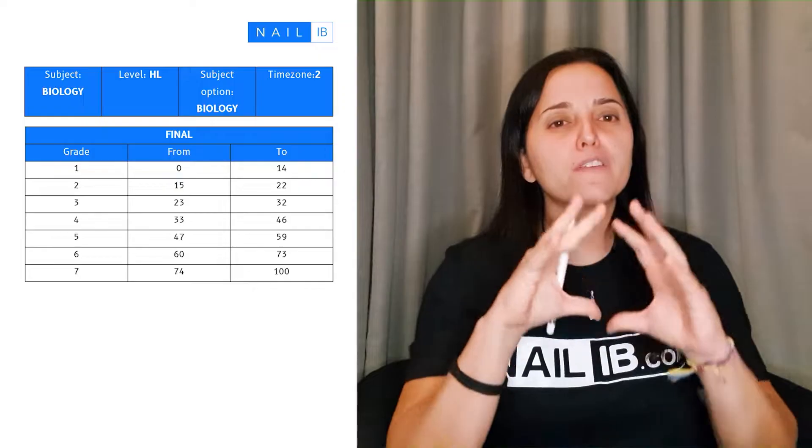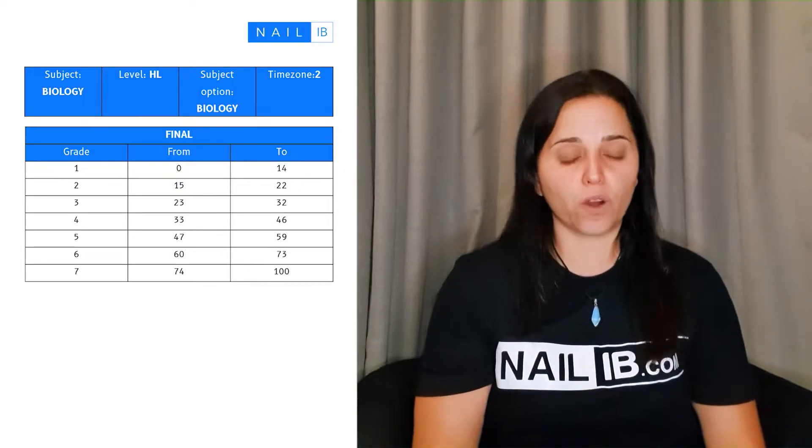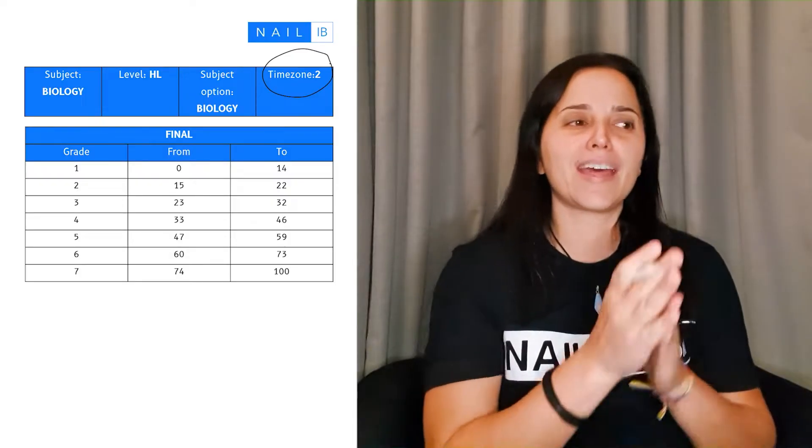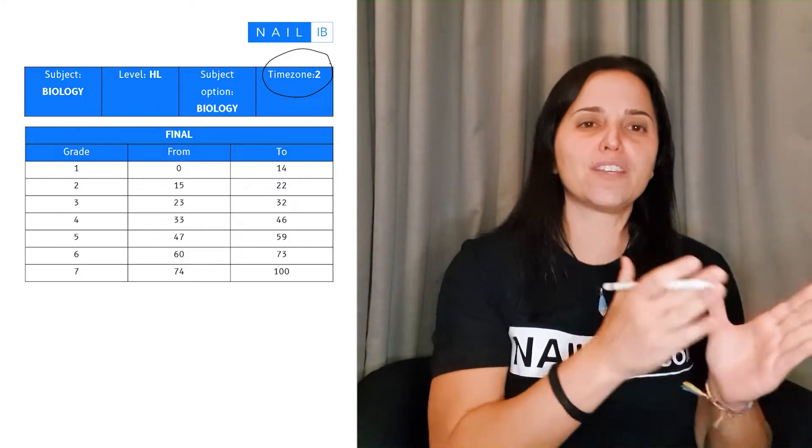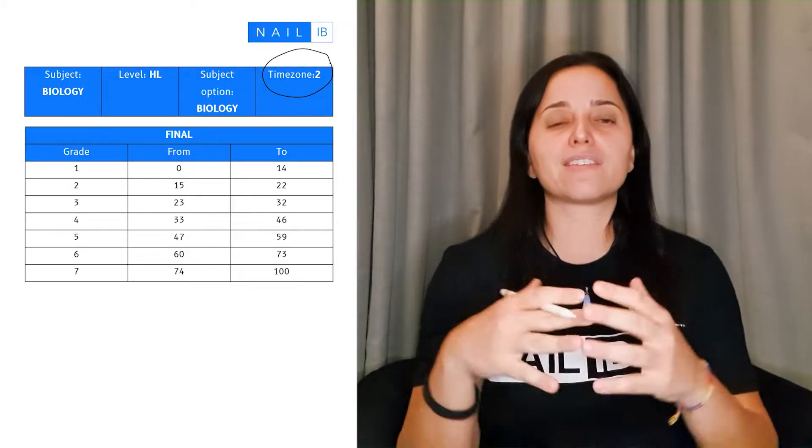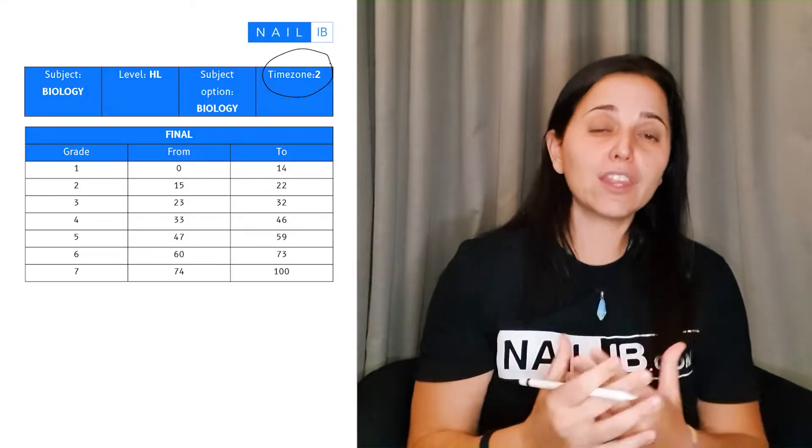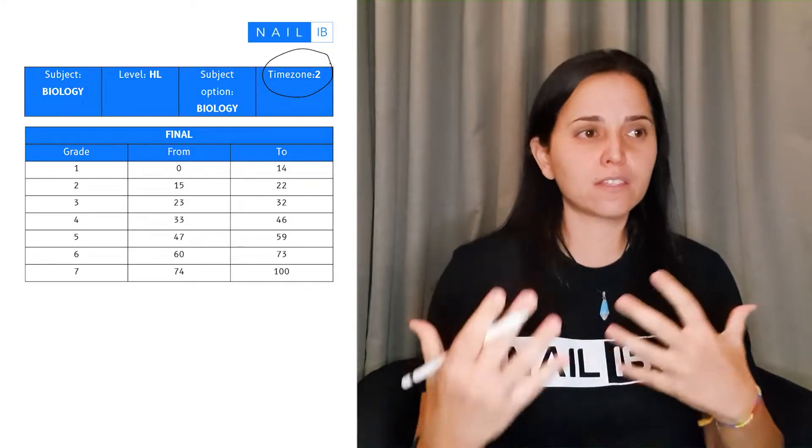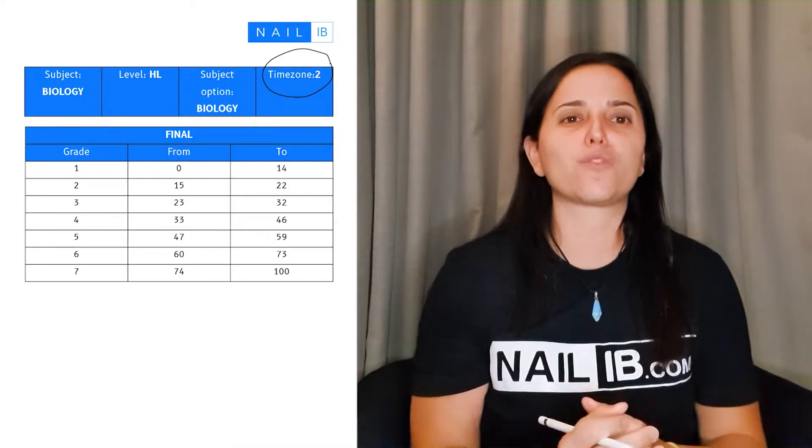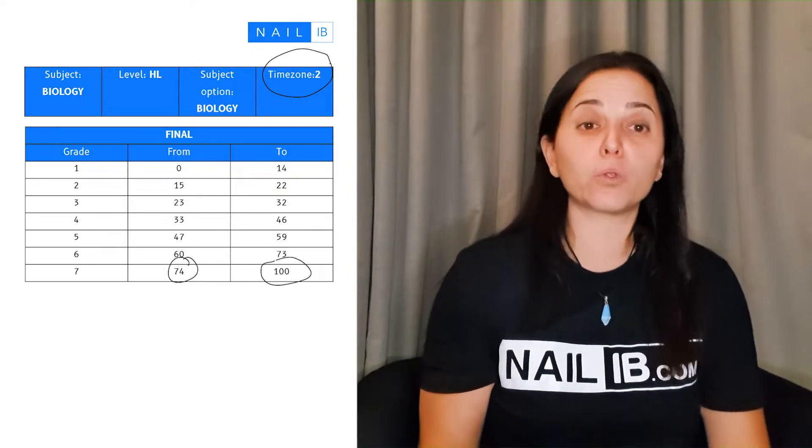Let me give you a scope of the range of grades here. Here we have basically showing the grades on time zone two. There are different time zones—zero, one, and two—that depends on where you are in the world. So there are three different types of tests, and they're going to look at the students' performance and according to their performance, create the ranges from one to seven. If you get 74 points up to 100, anywhere between this, you are a seven.